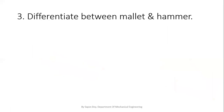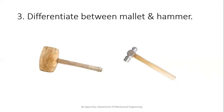The next question is: what is the difference between a mallet and a hammer? In the picture, the left side shows a mallet and the right side shows a ball-peen hammer. Their applications are different — we use a mallet for wood purposes, that means in carpentry, fitting, or pattern shop. For other metalworking operations, we use the hammer.